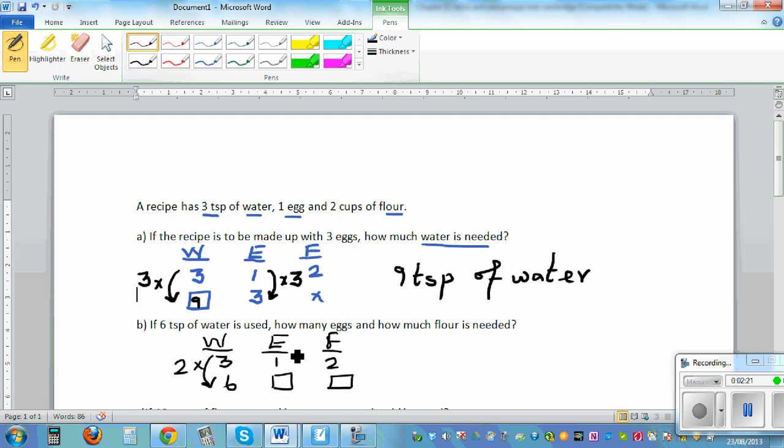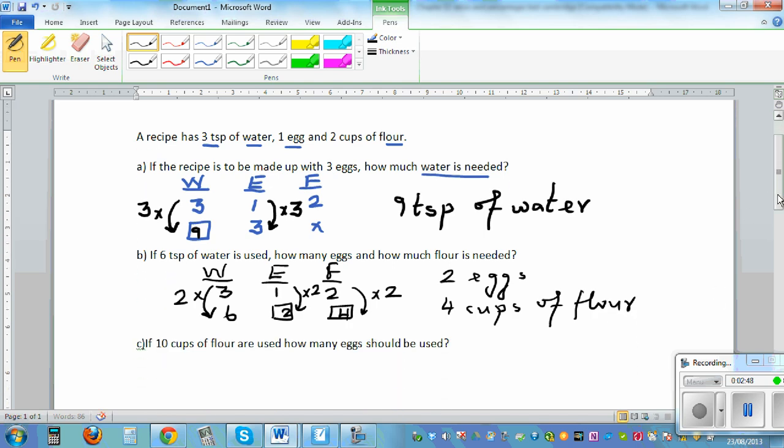So you increase this by the same proportion. So this is times 2. So this has to be 2. And this also has to increase by proportion. Or this is also called a factor. So we can say you need 2 eggs and 4 cups of flour.